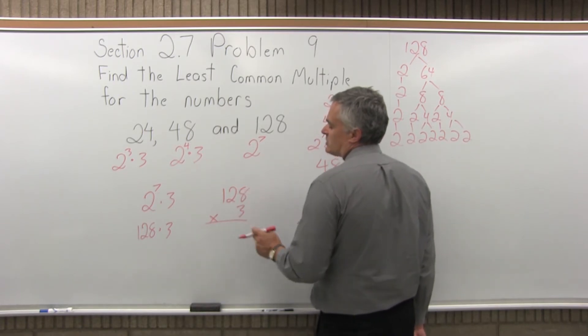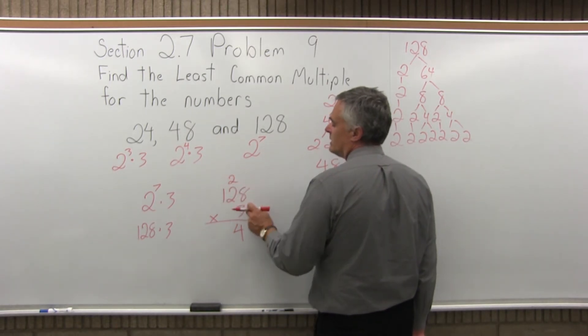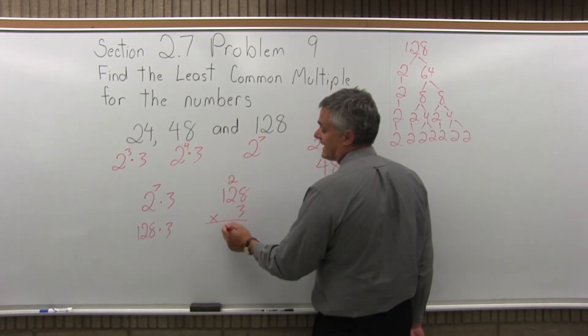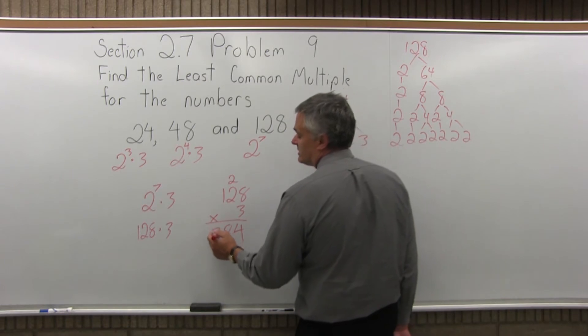So 3 times 128. Start with 3 times 8 is 24, write the 4, carry the 2. 3 times 2 is 6, 6 plus 2 more that we carry is 8, nothing to carry this time. And then 3 times 1 is 3.